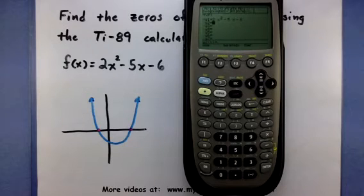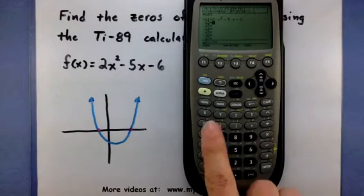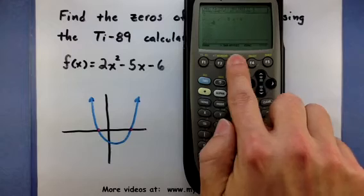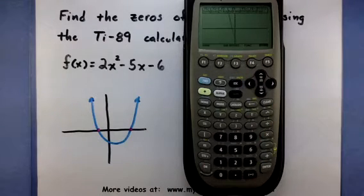Alright, so there's our function. Let's go ahead and take a look at it on the graph. So I'm going to press my green button, f3.